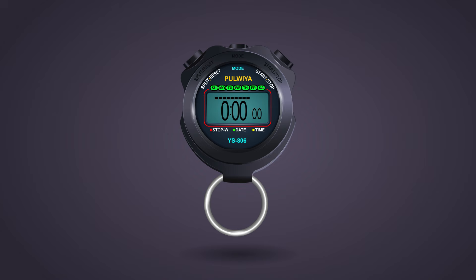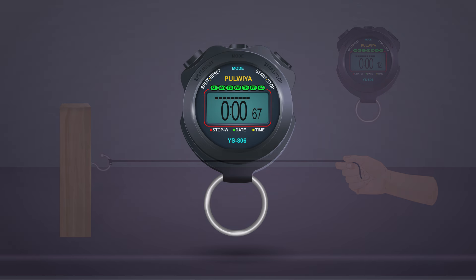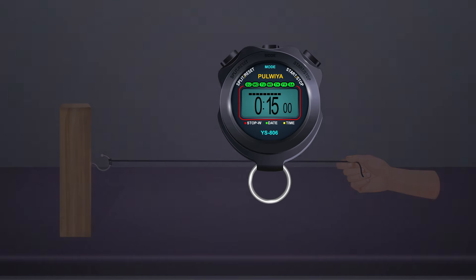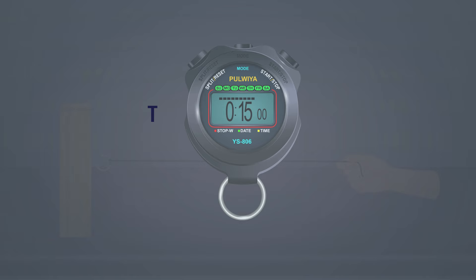Create a pulse and simultaneously start the stopwatch. Observe the time for n journeys. Calculate time period by T is equal to t upon n.